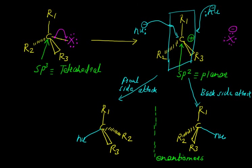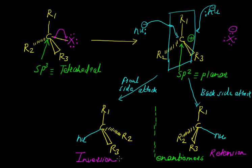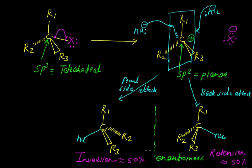When there is a front side attack, we get inversion in configuration. When there is a back side attack, we get retention in configuration. Both these products are approximately equal to 50% each, indicating that whenever there is an SN1 reaction, we end up with two types of product — a racemic mixture — with equal stereochemical equivalence of around 50%.